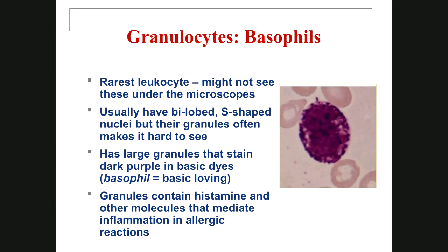The next cell is called basophil. The basophil is the rarest leukocyte we have — sometimes we might not even see this cell when checking slides under the microscope. The round, variable-size granules of the basophil are basophilic, meaning the color of the granules is dark blue to dark purple or sometimes black. These dark granules sometimes cover the nucleus, so you cannot see the shape of the nucleus very clearly. The granules contain histamine and other molecules like heparin, and they are very important for mediation and regulation of inflammation in allergic reactions.